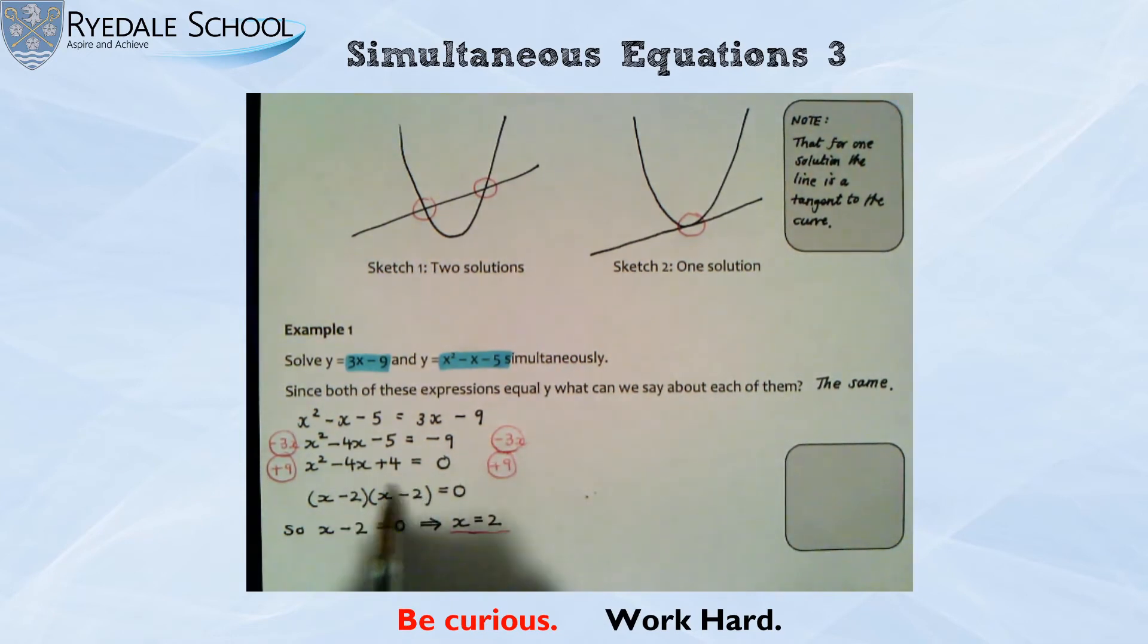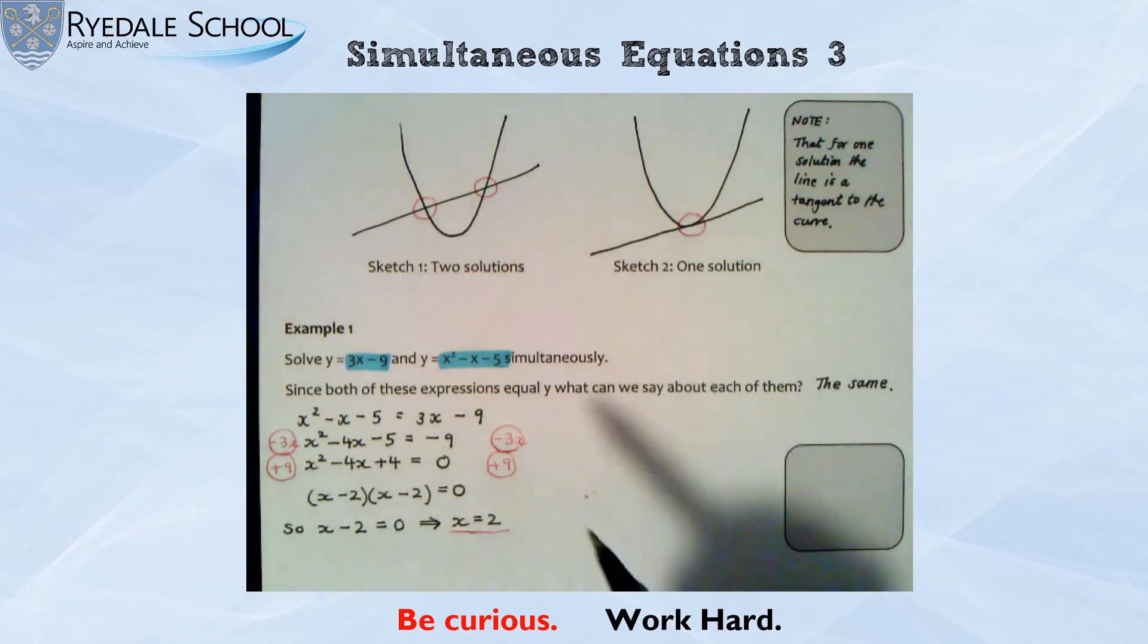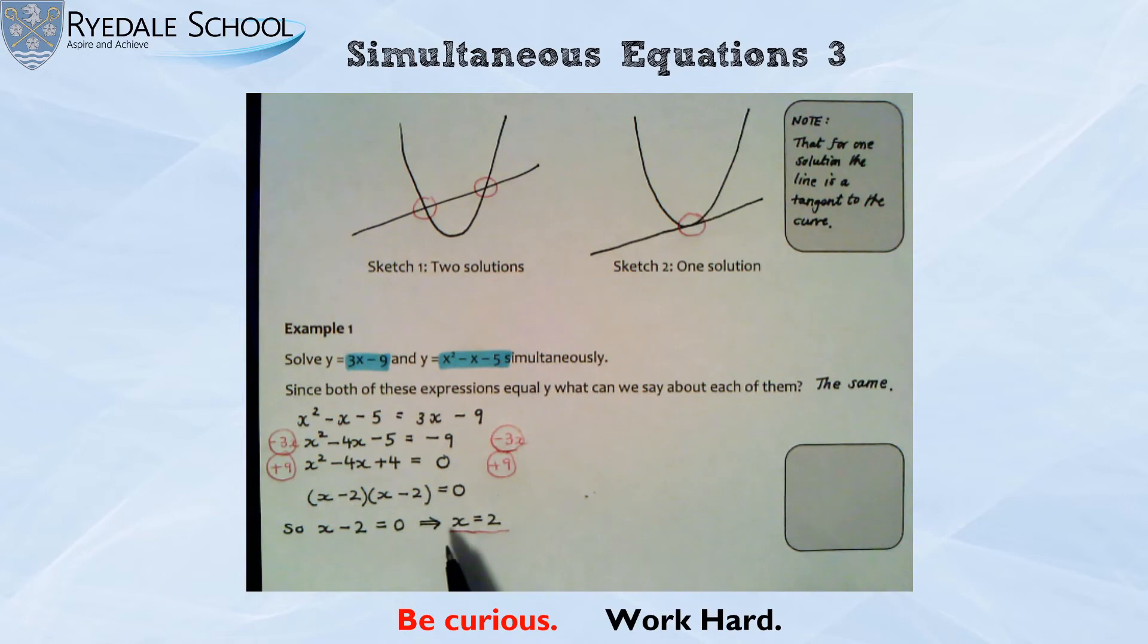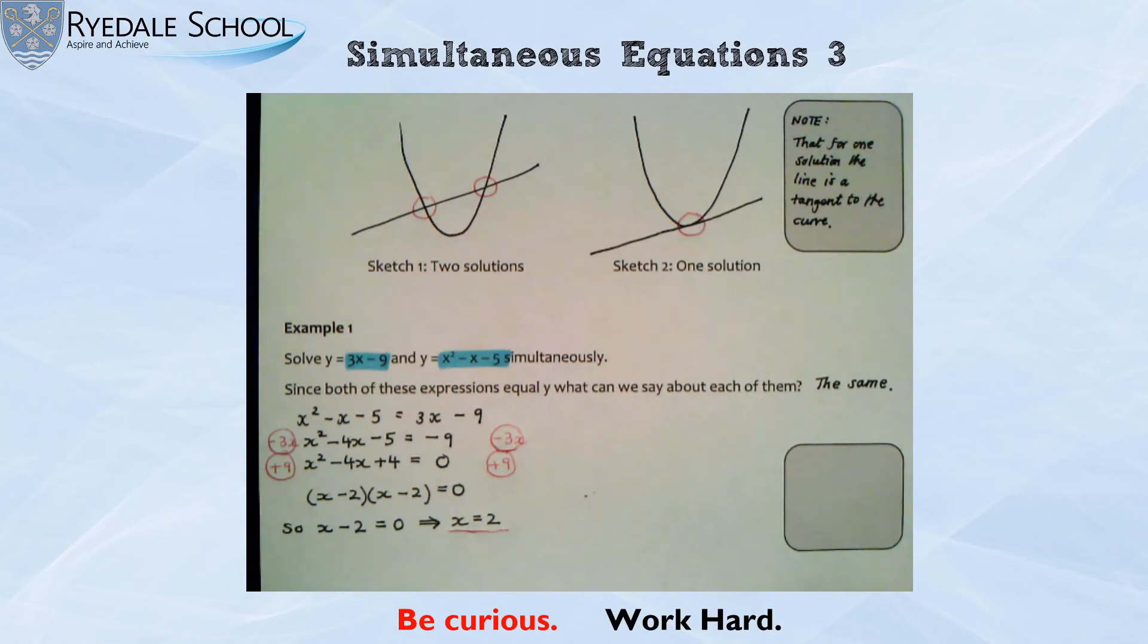Okay? If there was two solutions, I would end up with two different brackets here. Now that I know x is 2, I need to work out the corresponding y number. In other words, what the coordinate would be. Sometimes a question might ask you to write coordinates. Sometimes it might just ask you to write x and y down. So I'm going to do a little bit like what we do in normal simultaneous equations, a substitution. And obviously, I'm going to substitute into the linear expression because it is easier to work out what y is.